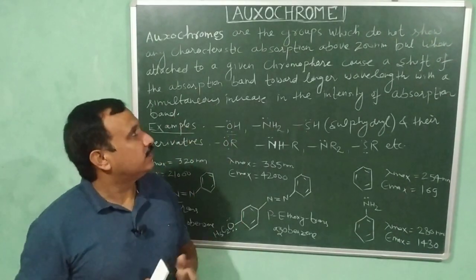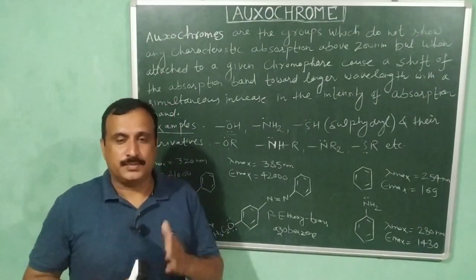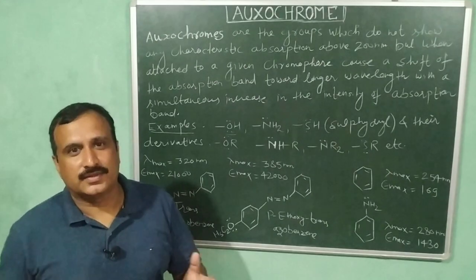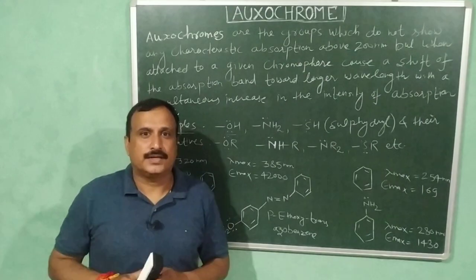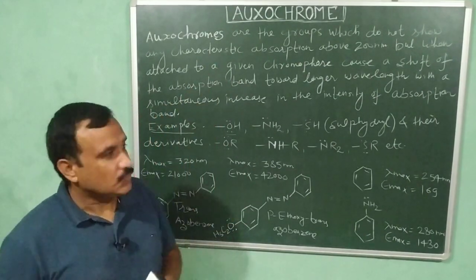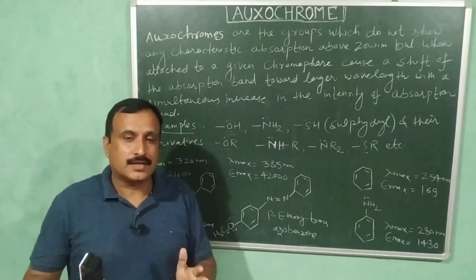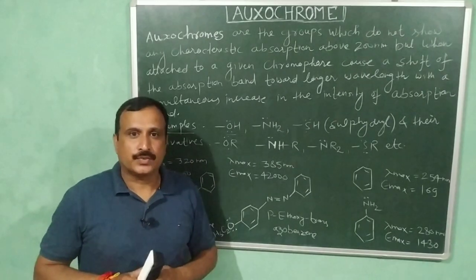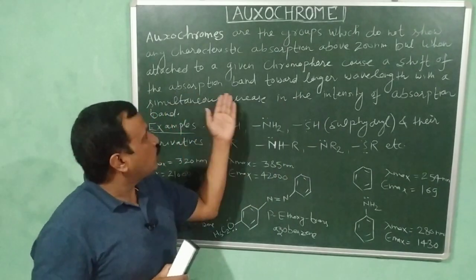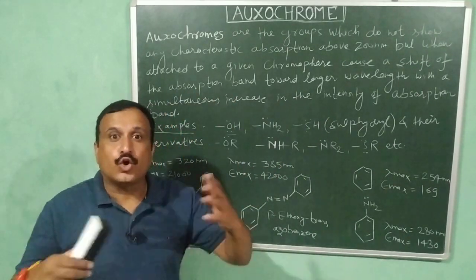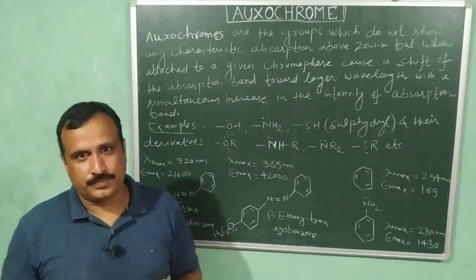Now I will define the term oxochrome. If you are new to my channel, please subscribe and press the bell icon for further notifications, and please don't forget to like and share my videos. Oxochromes are groups which do not show any characteristic absorption above 200 nm, but when attached to a given chromophore, cause a shift in the absorption band towards longer wavelength with a simultaneous increase in the intensity of the absorption band.